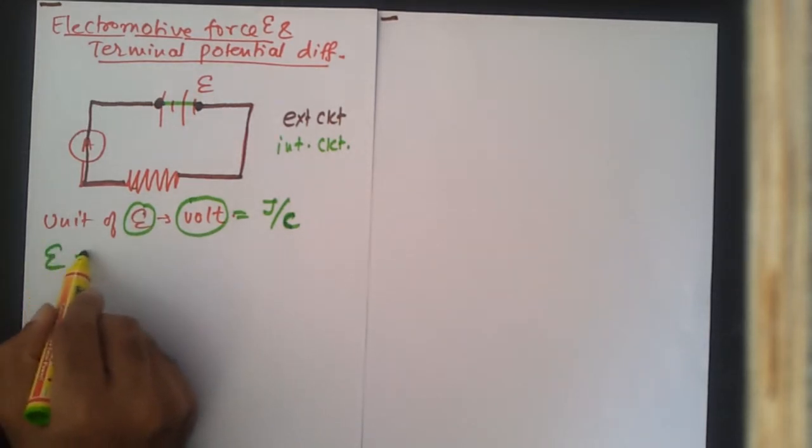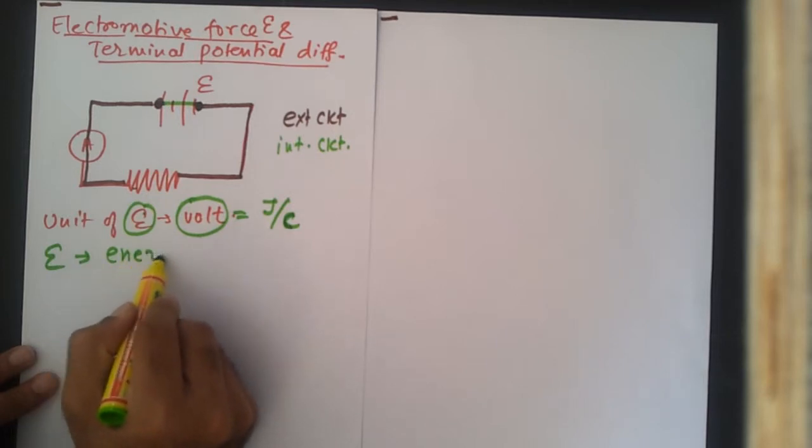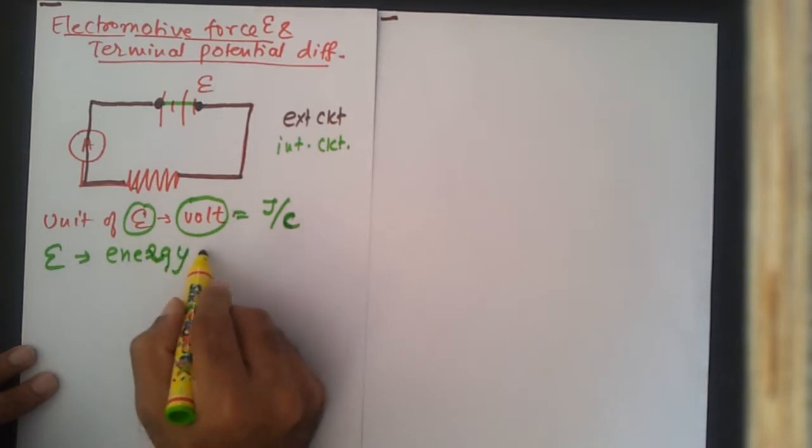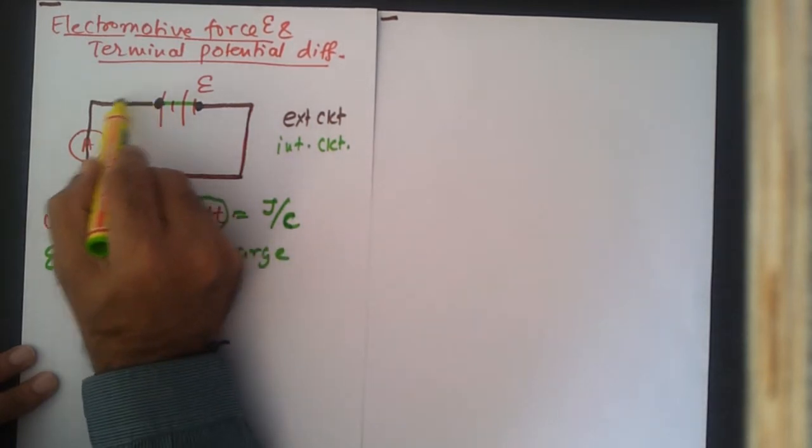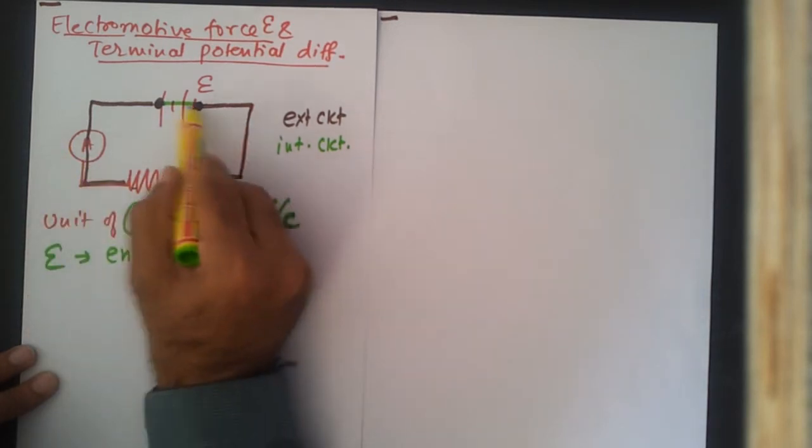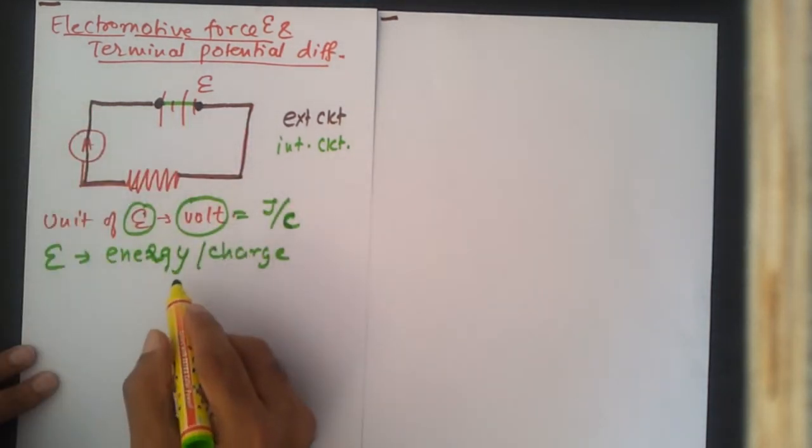So epsilon volts is basically the energy per unit charge to make the current flow in the external as well as the internal circuit. This can be broken up into two parts, so epsilon can be written as the energy for the external circuit as well as energy for the internal circuit. When I have broken up epsilon into two parts, VE and VI.